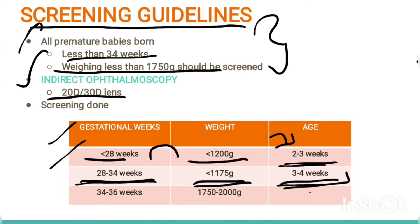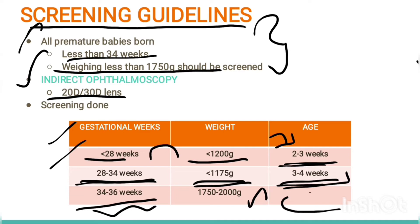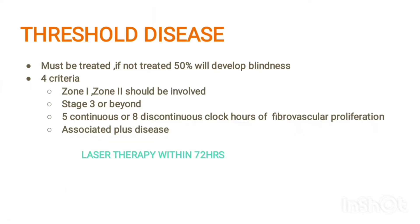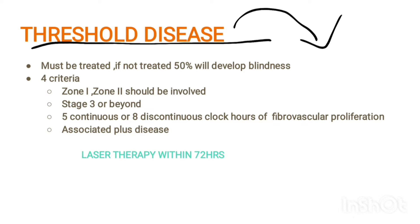If the baby is 34 to 36 weeks gestational age, with weight between 1075 to 2000 grams, they need follow-up. Now we will see threshold disease — which cases should be treated. If this condition is not treated, 50% will become blind, so it is very important to treat threshold disease immediately.